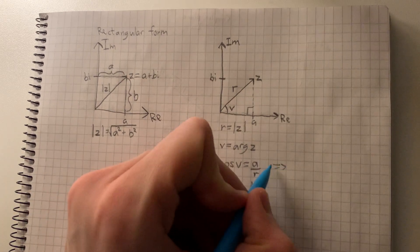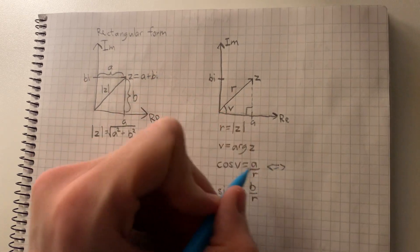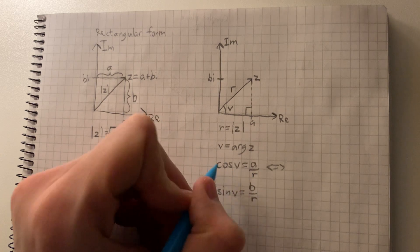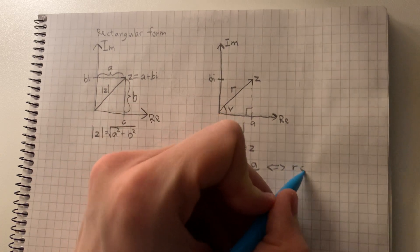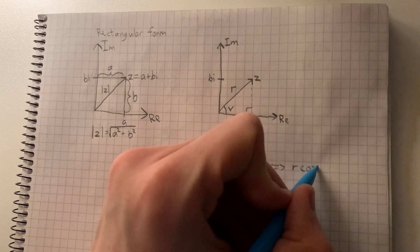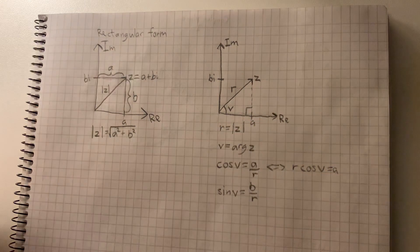If we then move R to the other side, we get a equal to R cosine V and b equal to R sine V.